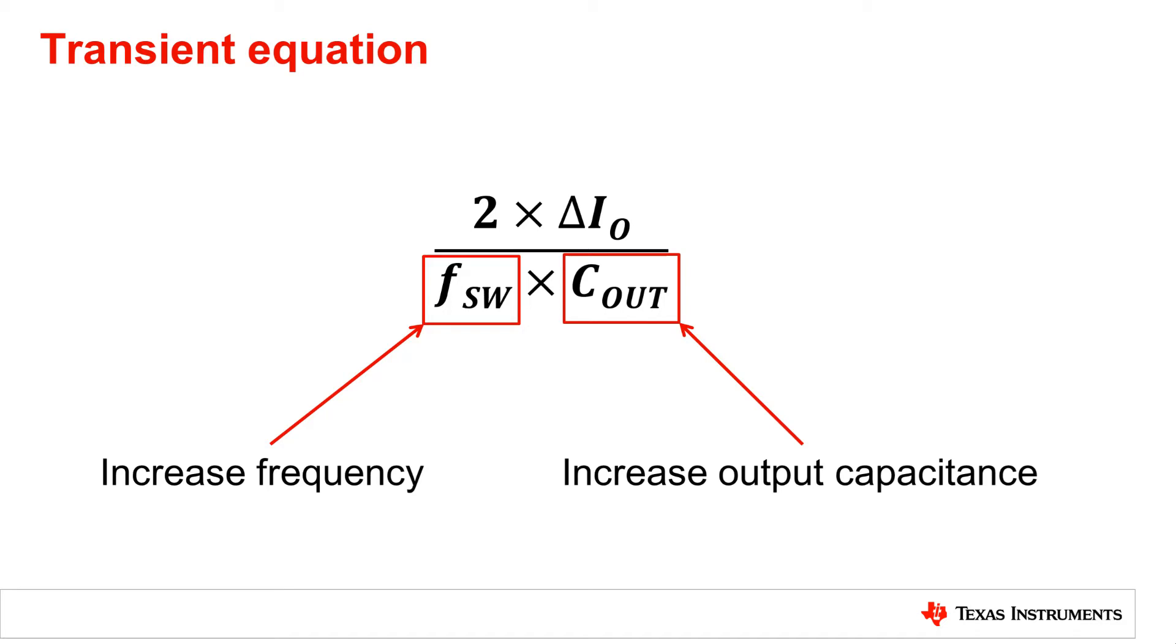Capacitance is more common to decrease overshoot and undershoot but does have the downside of increasing the size of the converter.